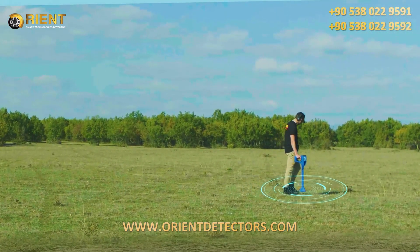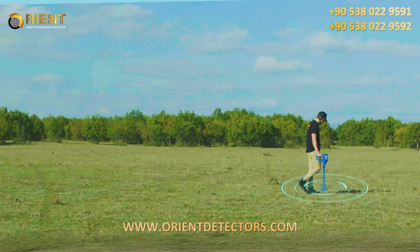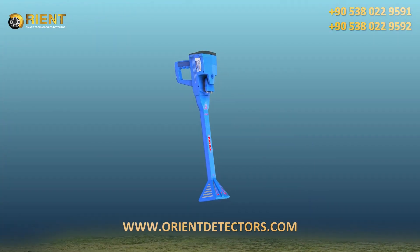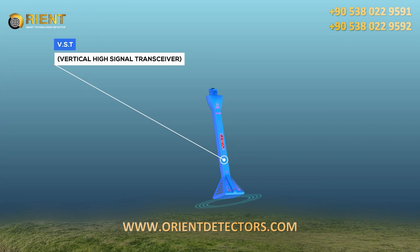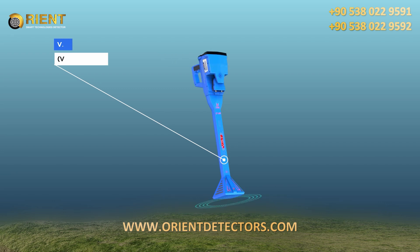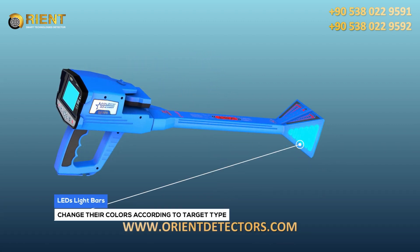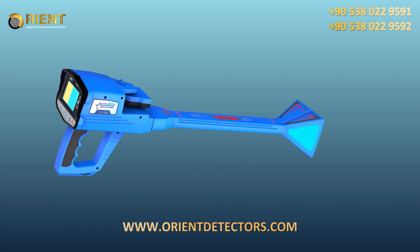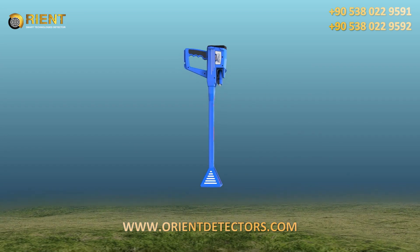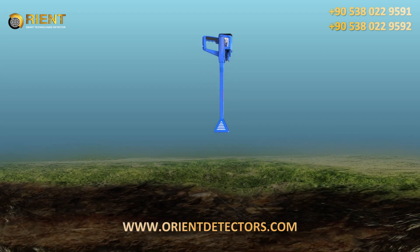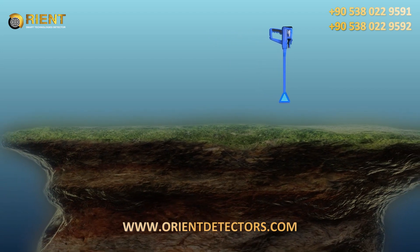The signal measurement process, or the scanning process, is done by the VST — Vertical High Signal Transceiver Unit — which is a probe at the end of which there is a quadrilateral cone on both sides, and bars consisting of many light-emitting diodes, or LEDs, that change their colors according to target type. For example, the LED lights will light up in blue when passing over a cavity or space, such as a tunnel.